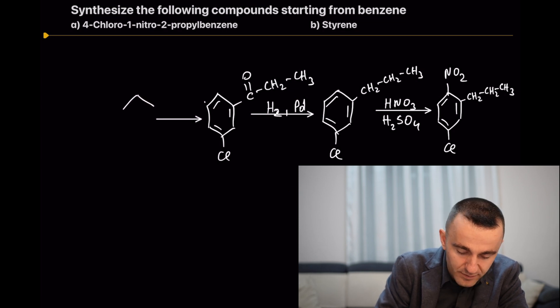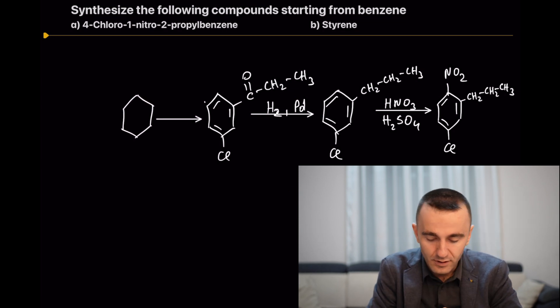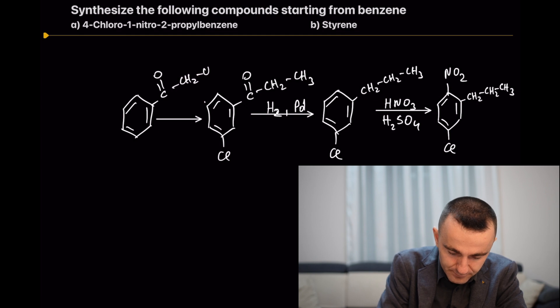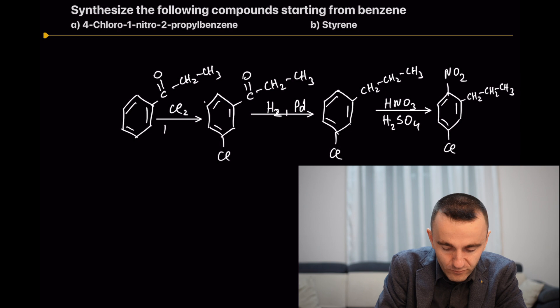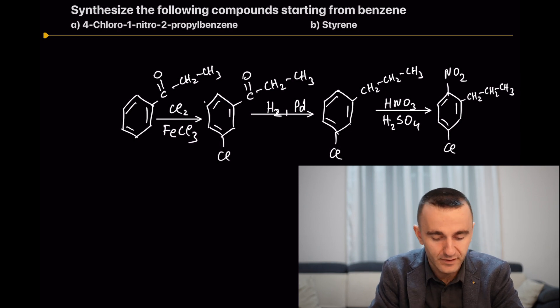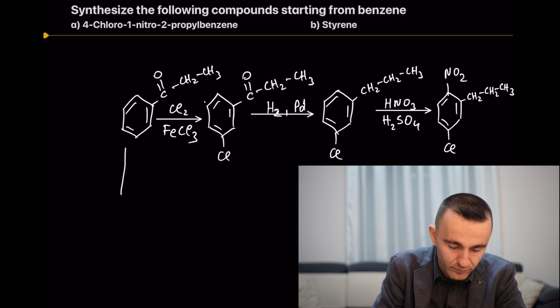The situation becomes easier. What are we going to do now? We need to keep this one and add the chlorine—chlorination with a catalyst, iron(III) chloride. Let's move backwards again.